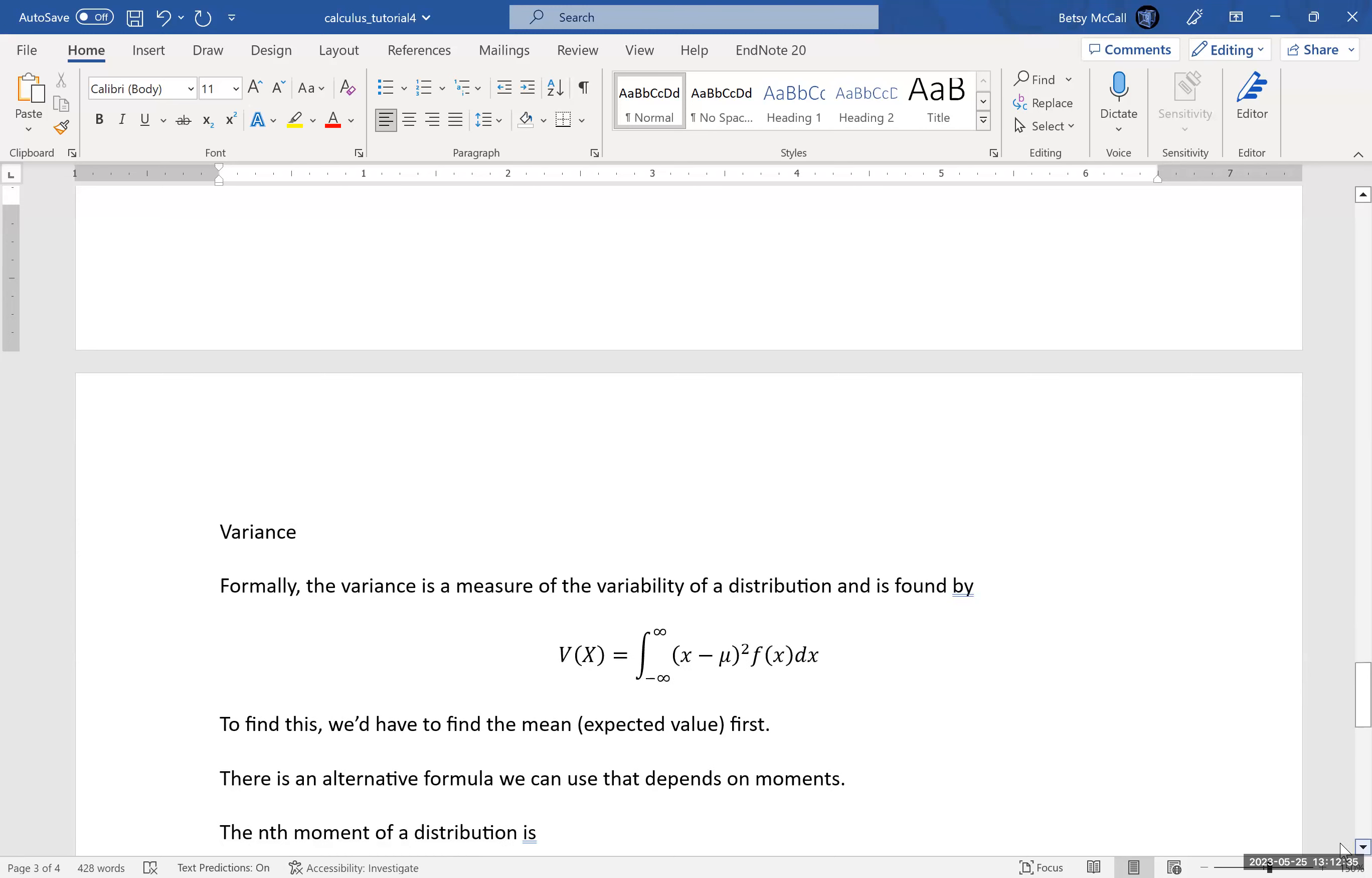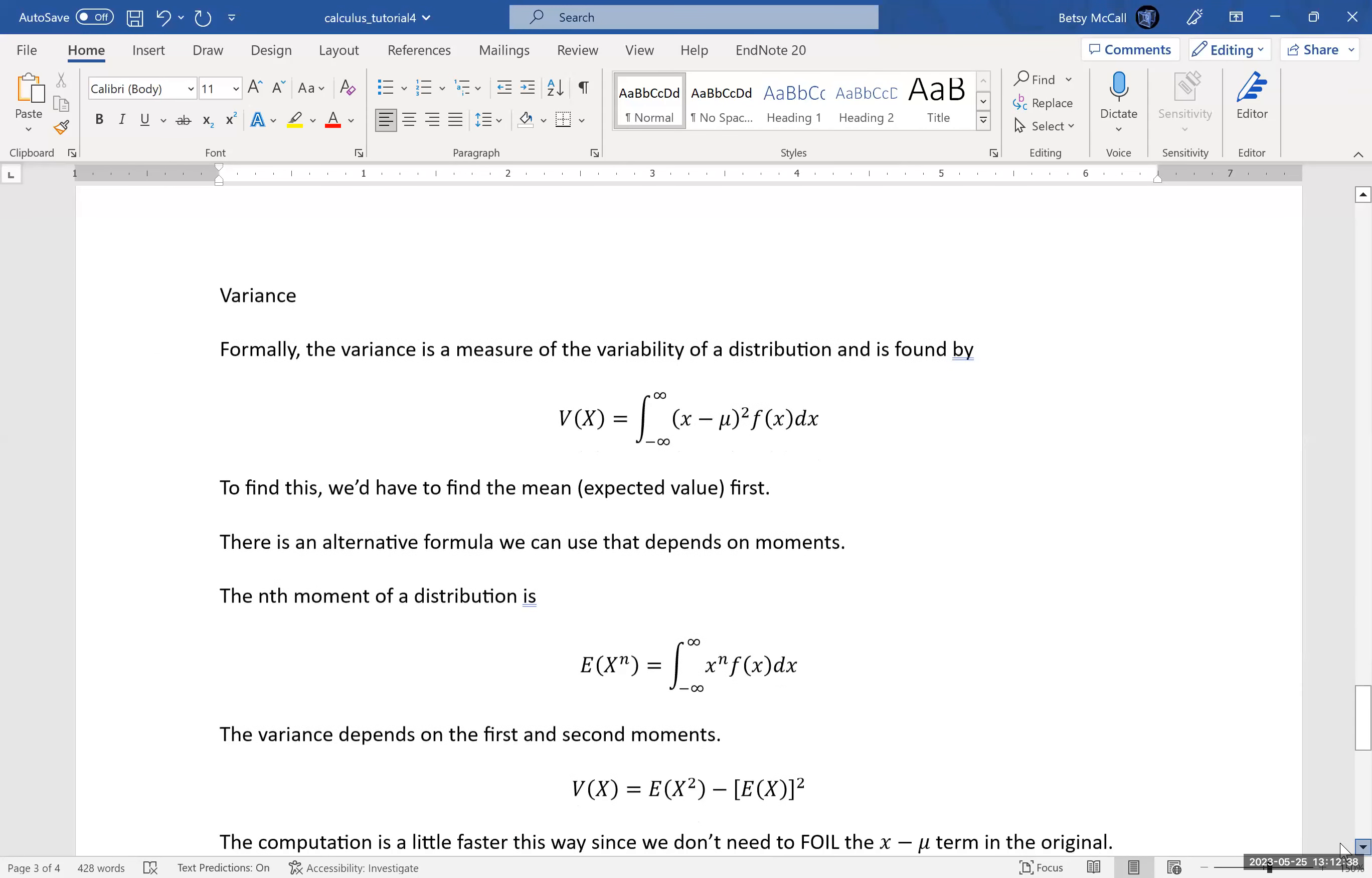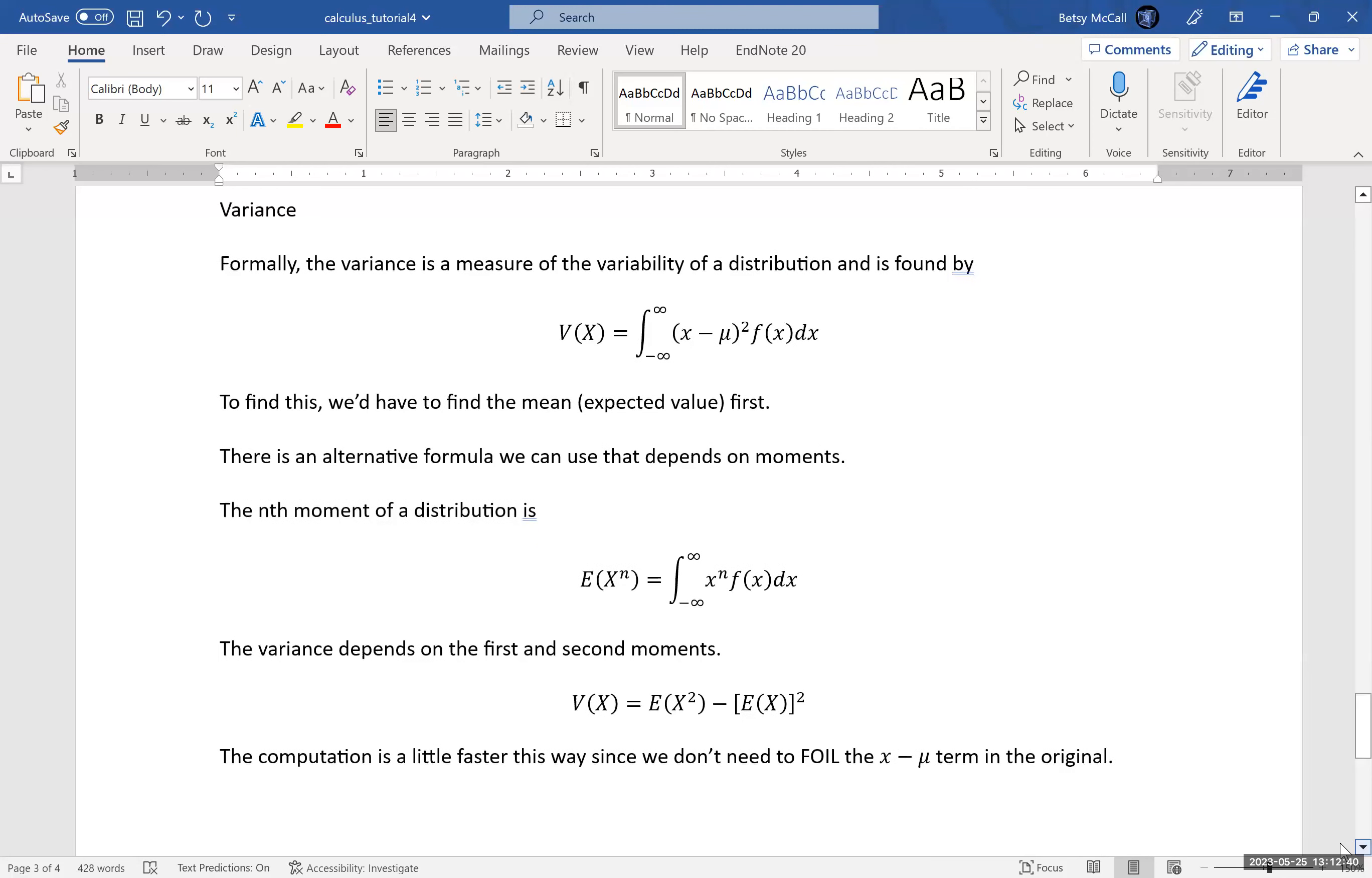Now, the other thing that we can calculate about our probability distributions using calculus is the variance. And from the variance, of course, the variance is the square of the standard deviation. So we would first have to calculate the variance before we can calculate the standard deviation.